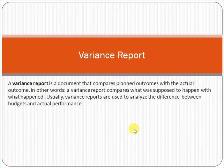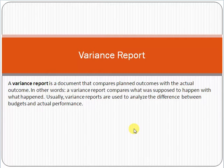Let's start with variance report. First, let's understand what variance report means. A variance report is a document that compares planned outcome with the actual outcome. In other words, a variance report compares what was supposed to happen with what actually happened. Usually, variance reports are used to analyze the difference between budgets and actual performance.